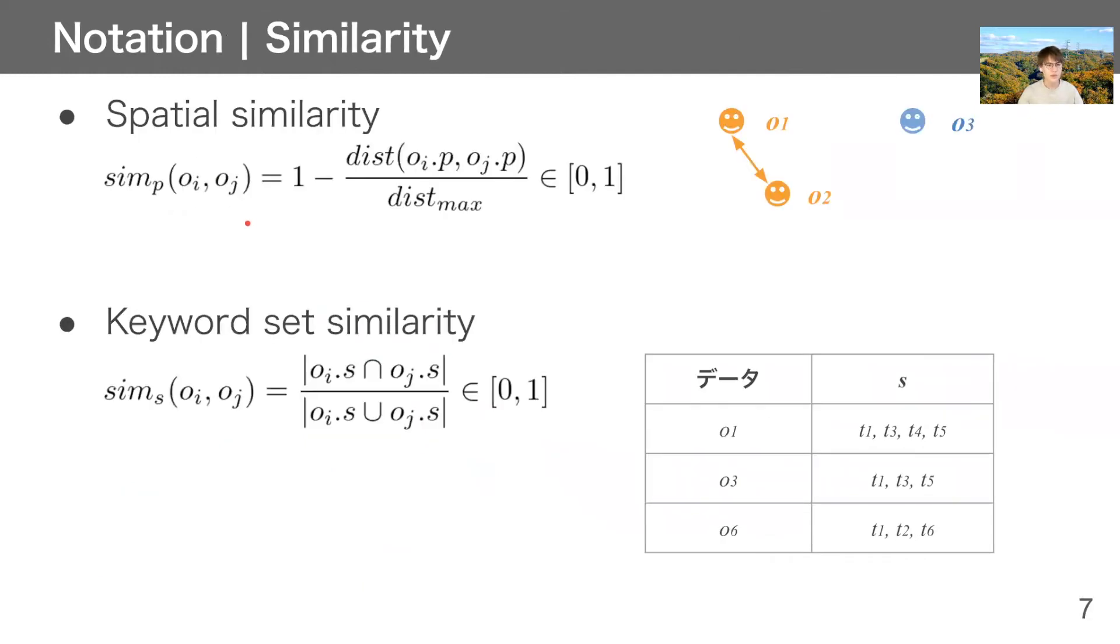Second, we introduce similarity. We define spatial similarity as simp. It is Euclidean distance-based similarity, where this means Euclidean distance between two points, and dist_max means maximum Euclidean distance.